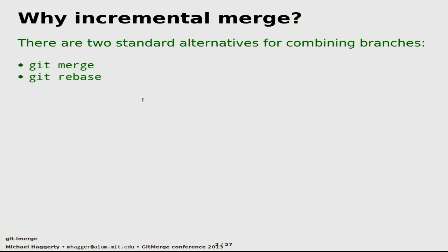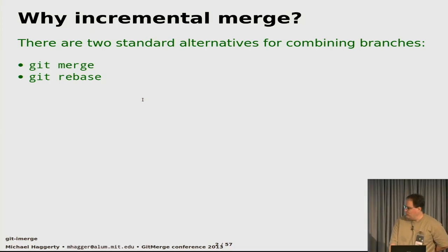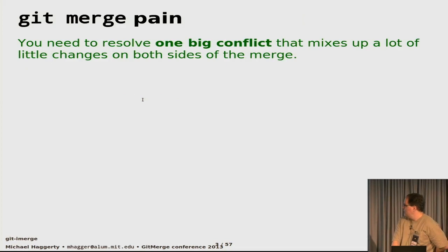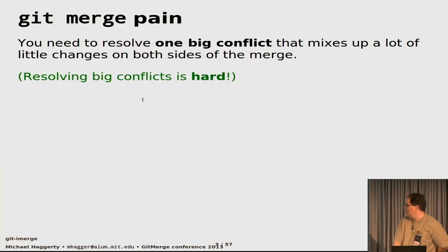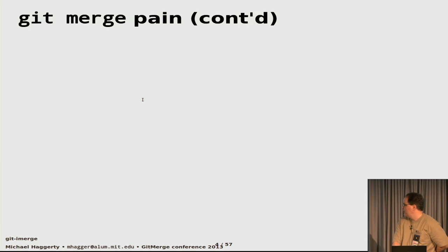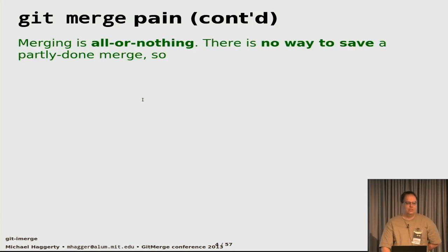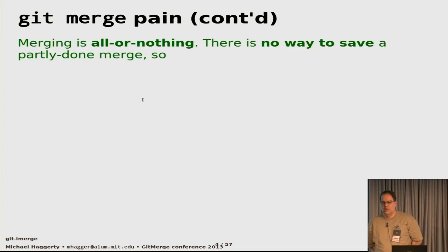The two common ways of bringing two branches together are git-merge or git-rebase. They both have big problems. With git-merge, you have one big commit that you have to resolve all in one burst. Resolving big conflicts is hard. Merging is all or nothing — once you've started a git-merge, you can't do anything else with your repository until you've either resolved the conflict or given up and gone back to your old version.